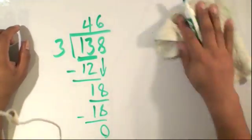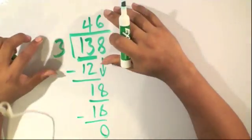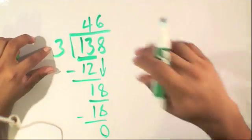Now, because division is the opposite of multiplication, we can actually check our answer by multiplying 46 and 3 together.